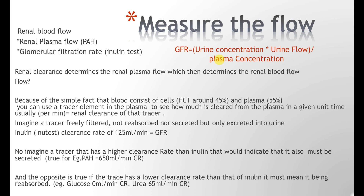Blood consists of cells — mostly red blood cells at around the hematocrit value, which is approximately 45% for men and slightly lower for women — and the rest is plasma. If you use a tracer element placed in the plasma and measure how much of it gets filtered out per unit time (usually minutes), you know the renal clearance of that tracer. Now imagine a tracer that is freely filtered, not reabsorbed in the renal tubules, and not secreted from the peritubular capillaries — only excreted into urine.